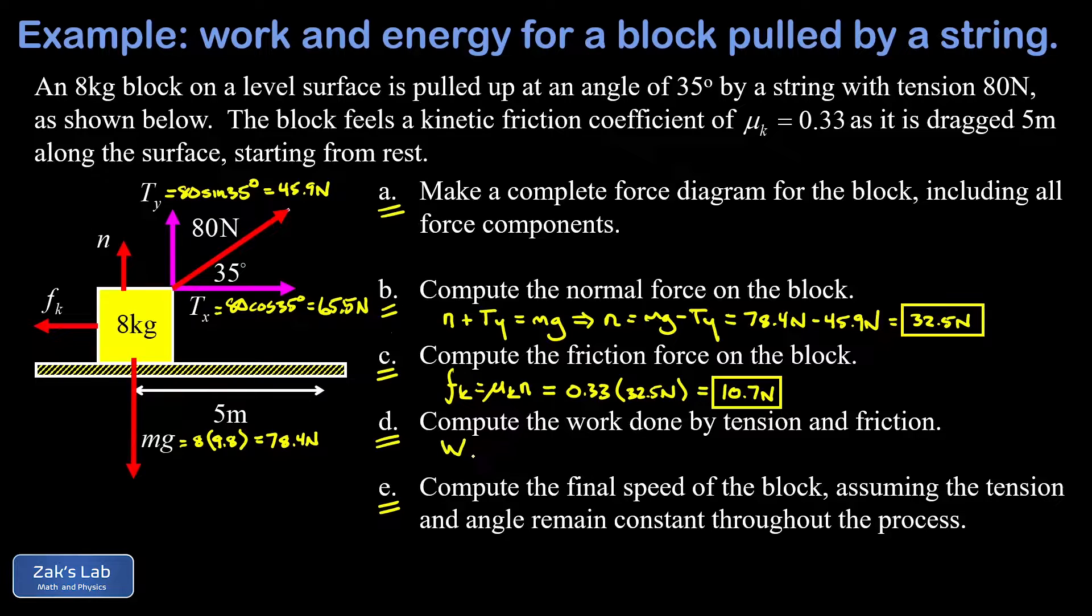Multiplied by the displacement. But the parallel component of the tension we already have a name for, that's Tx. And then I'll go ahead and call the displacement for now, we'll just call it delta x, but we know it's five meters. So we just sub in Tx, that's 65.5 newtons and a delta x of five meters. Note the units here come out to newton meters, but those are joules, and to three significant digits I get 328 joules for that work.